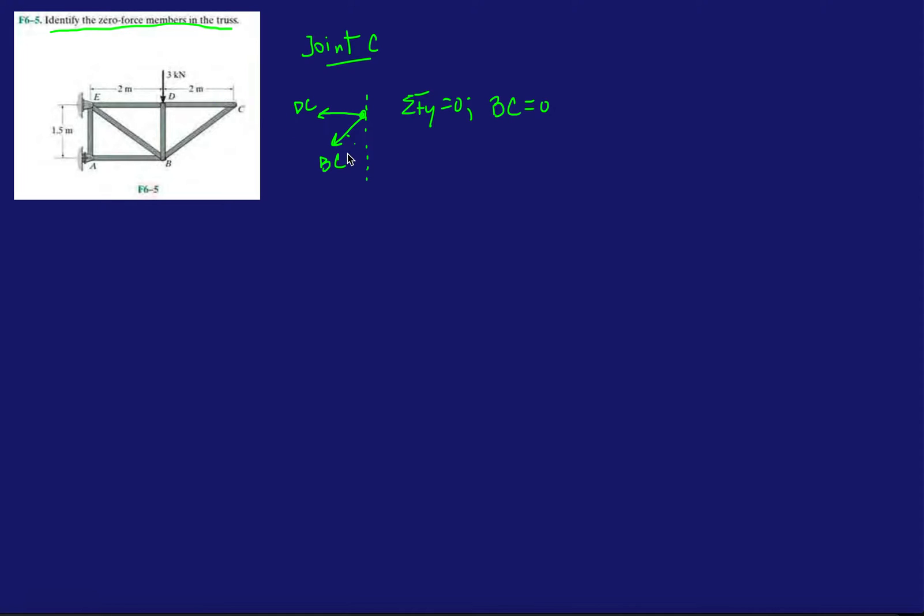So, you know, so 3 fifths BC equals zero, so BC equals zero, okay.